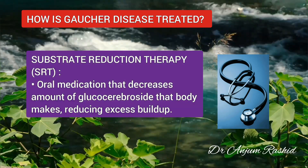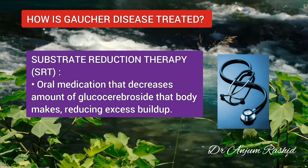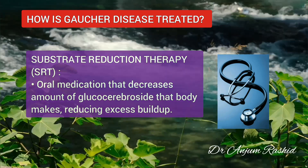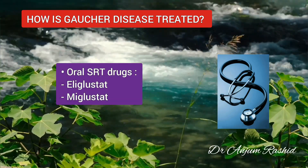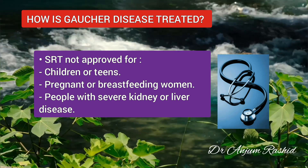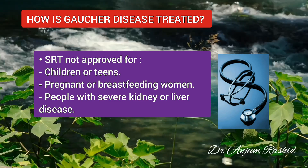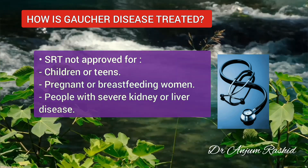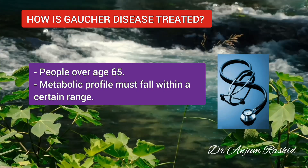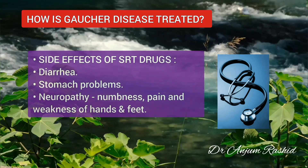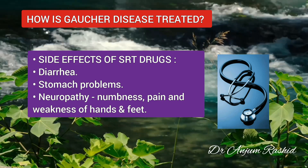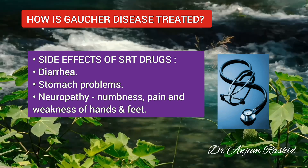The second treatment option is substrate reduction therapy (SRT), a newer treatment that works differently than ERT. It is an oral medication that decreases the amount of glucocerebroside the body makes, thus reducing excess buildup. There are currently 2 approved oral SRT drugs: elaglustat and miglustat. SRT is approved only for certain patients — it is not approved for children or teens, pregnant or breastfeeding women, people with severe kidney or liver disease, or many people over age 65. To receive elaglustat, your metabolic profile must fall within a certain range. Side effects may include diarrhea, stomach problems and neuropathy, which causes numbness, pain and weakness in areas like the hands and feet.